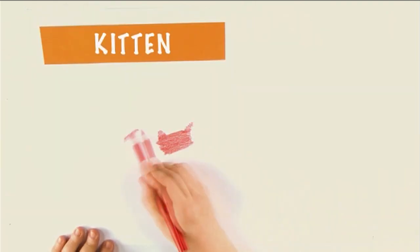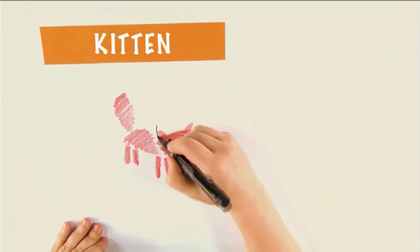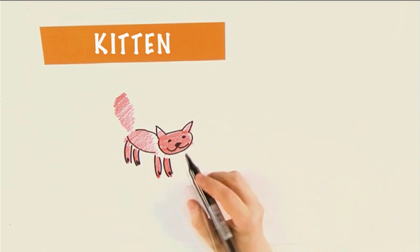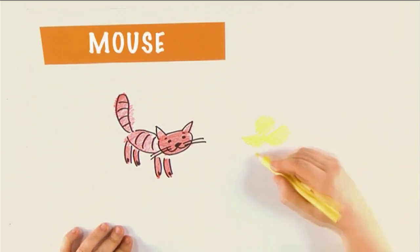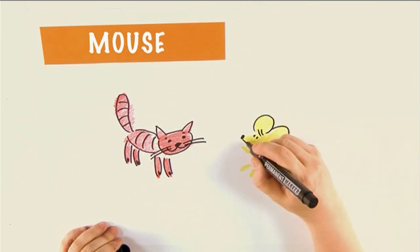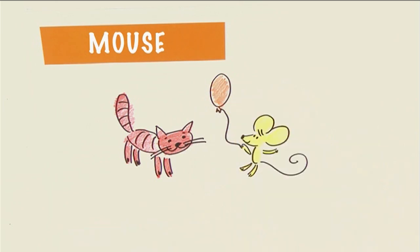This is kitten. Это котенок. He's fluffy and playful. Он пушистый и игривый. This is little mouse. Это мышонок. He's little and merry. Он маленький и веселый.